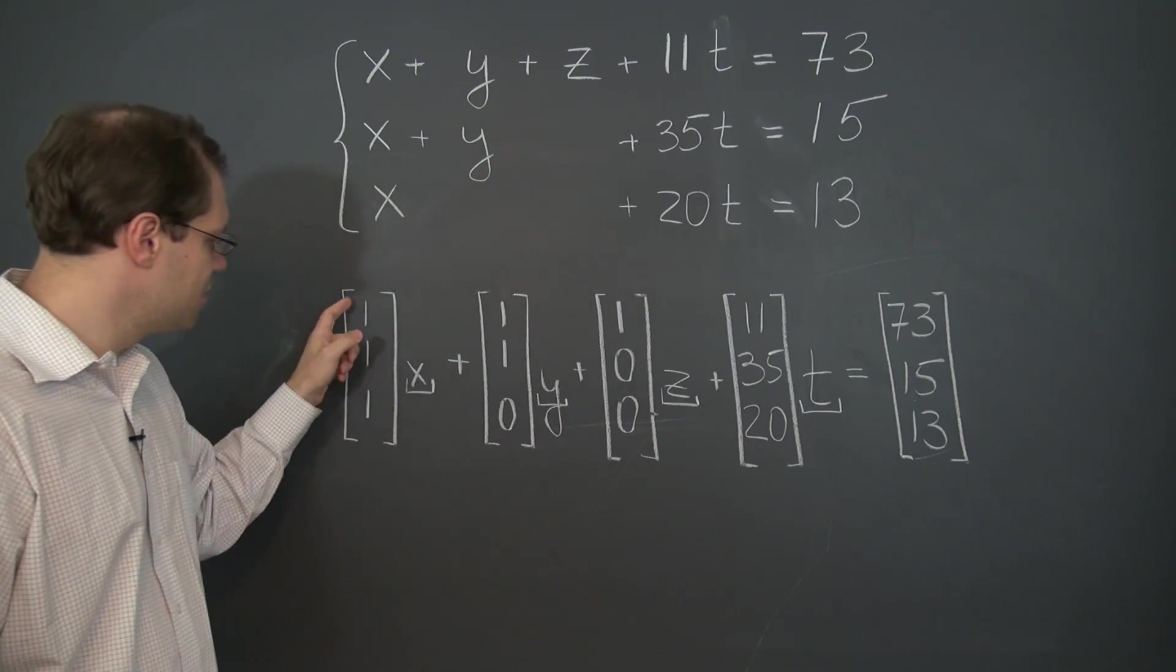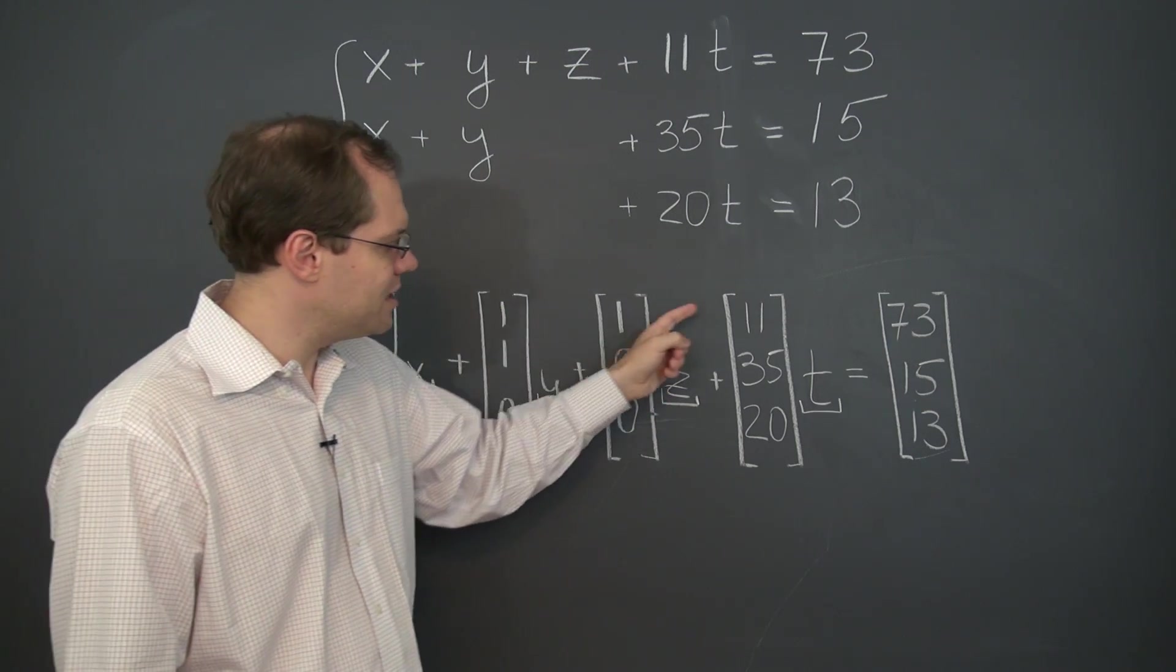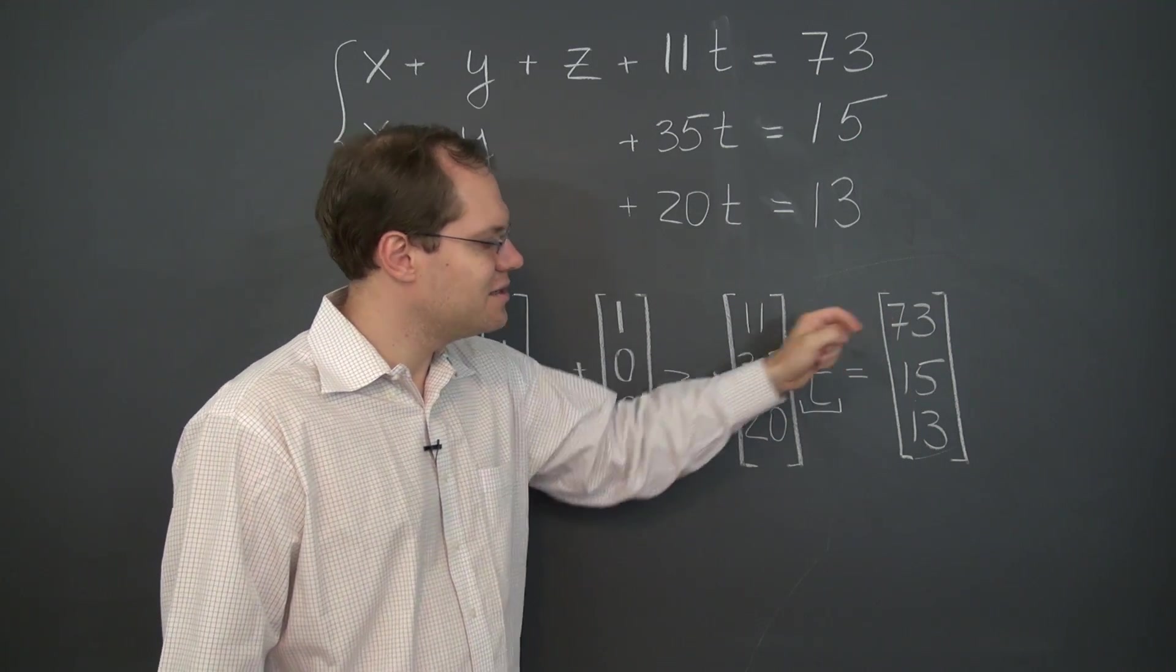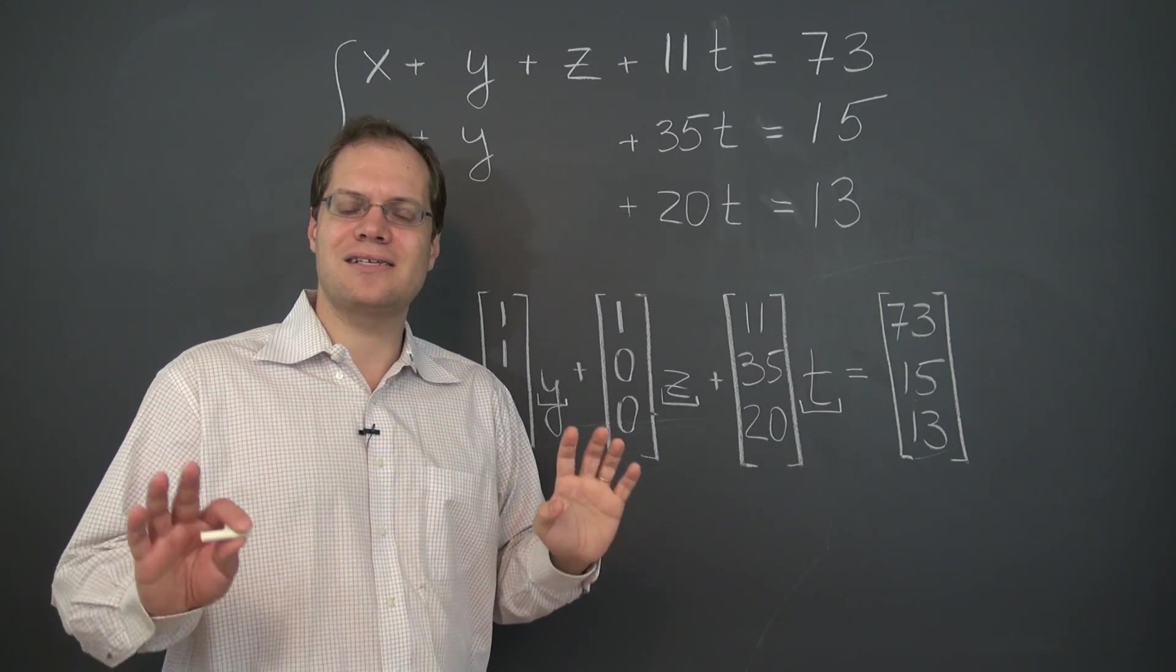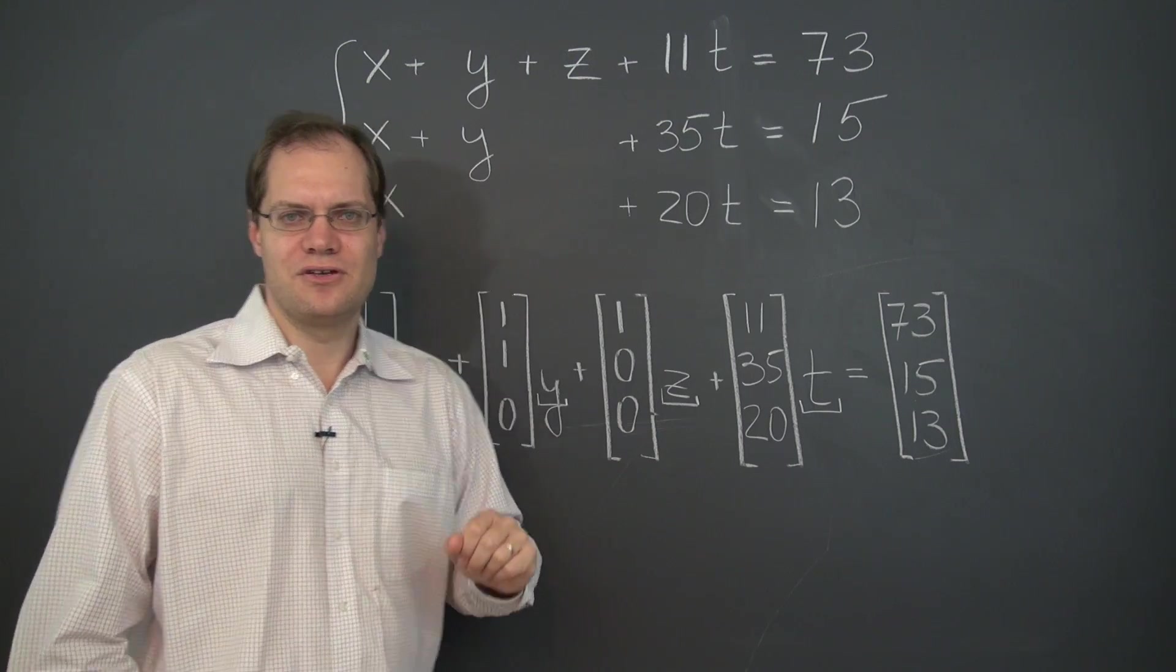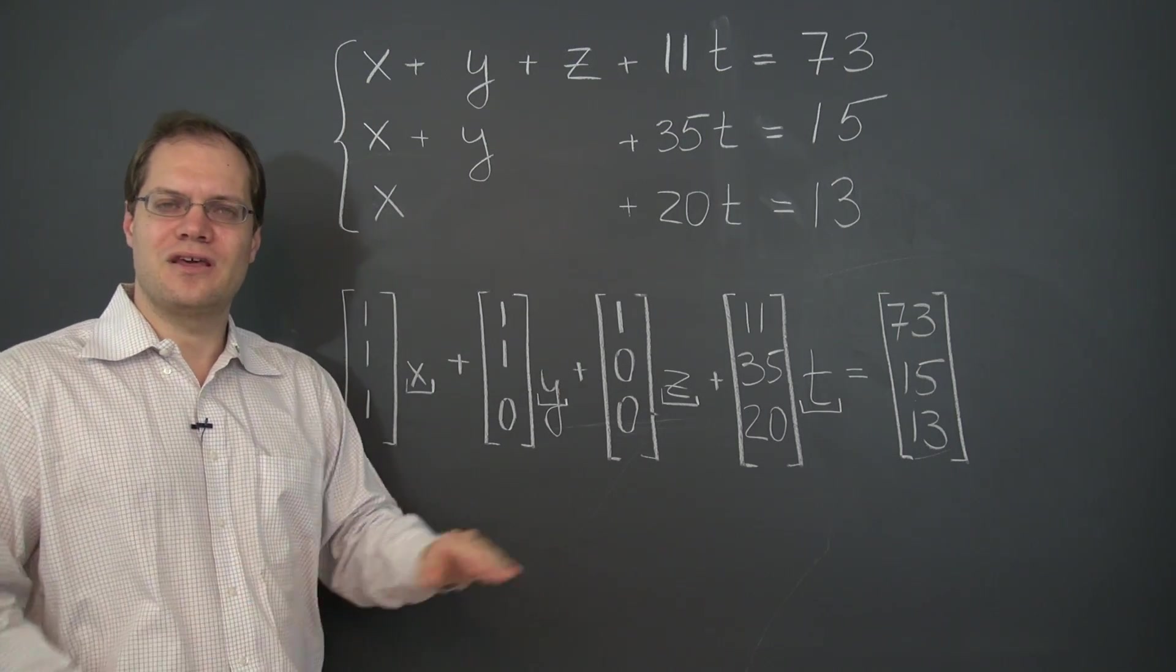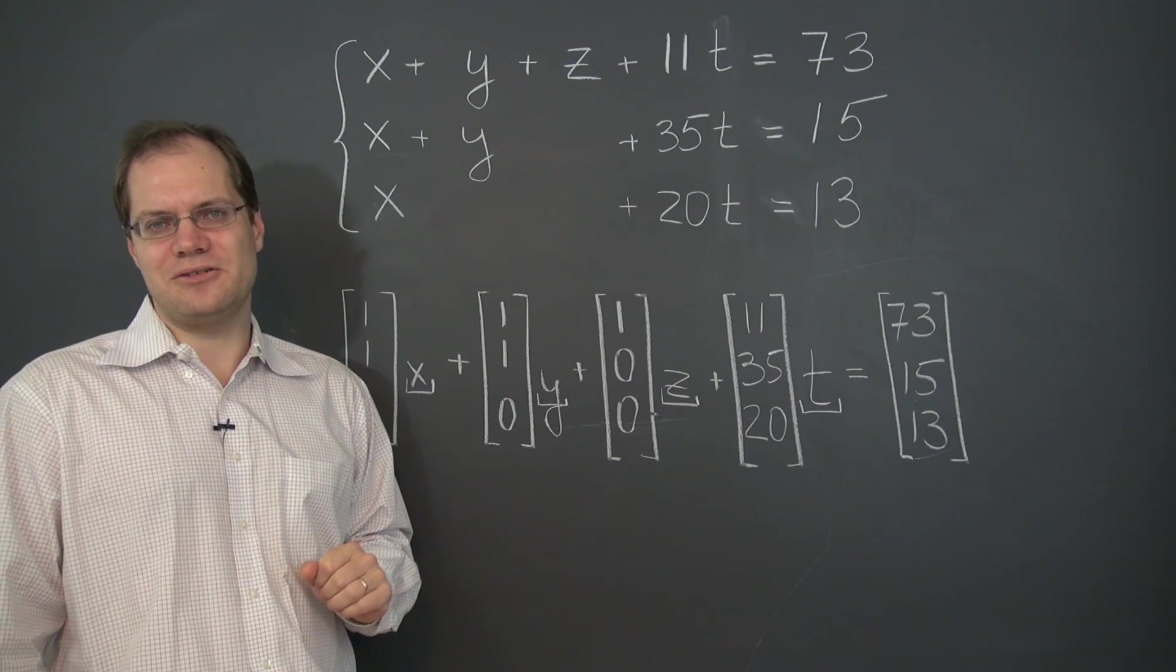1 times x plus 1 times y plus 1 times z plus 11 times t equals 73. The exact same four numbers. So to solve a linear system is to solve a decomposition problem.